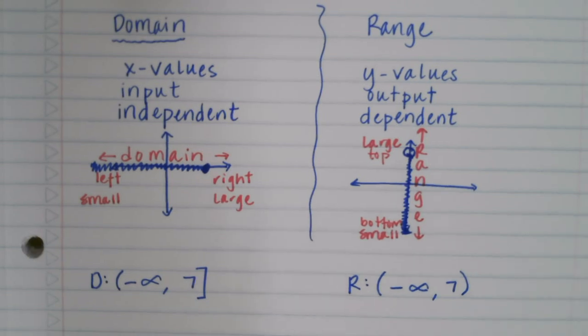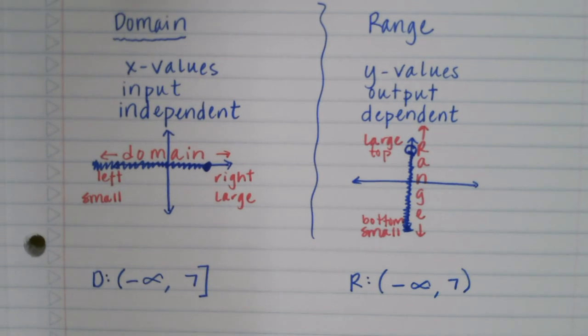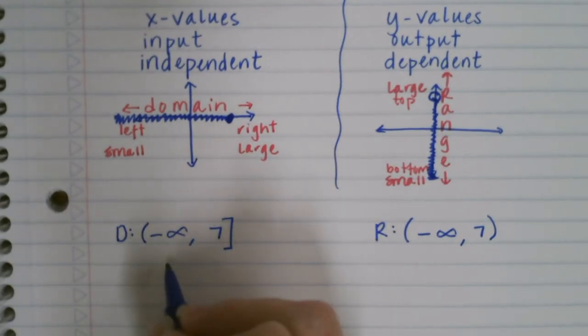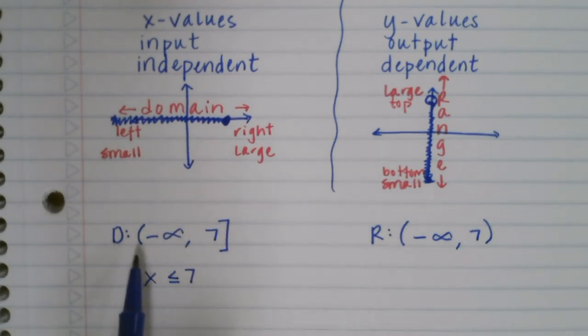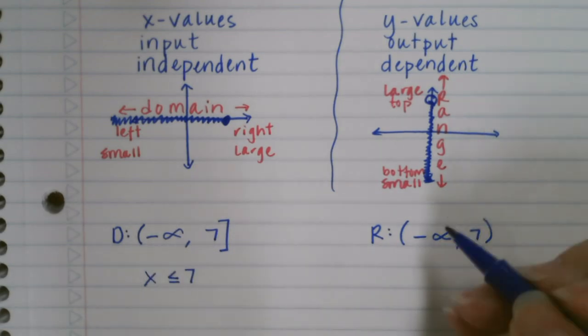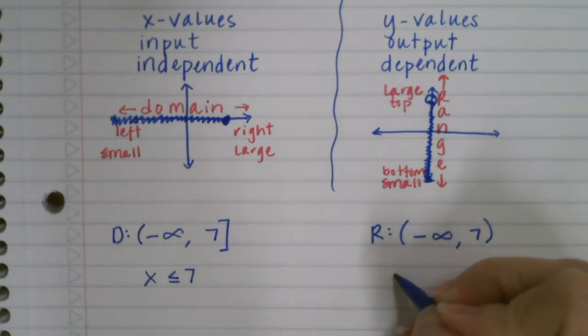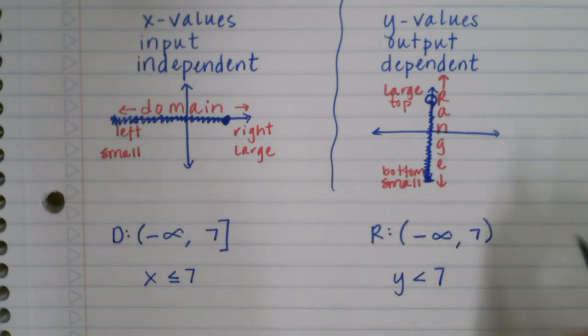So that type of situation is going to be the same. Over here we would say for this that x is less than or equal to 7, because x can be any number that's 7 or smaller.